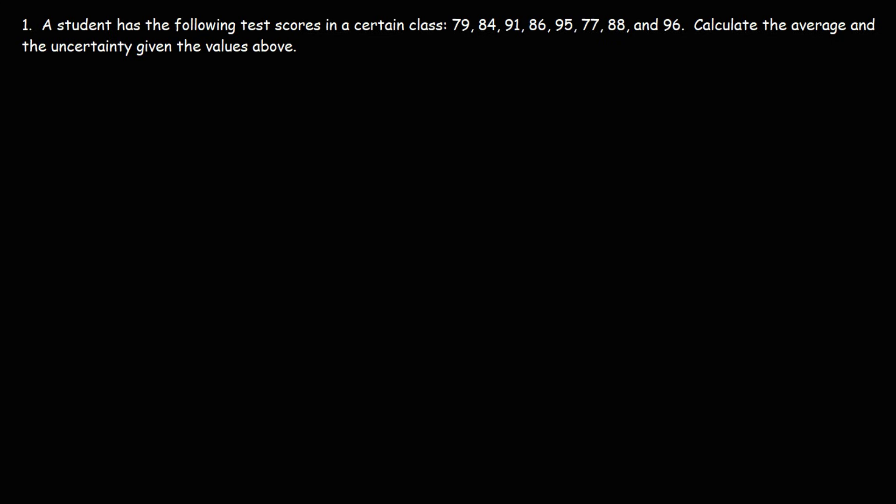A student has the following test scores in a certain class: 79, 84, 91, 86, 95, 77, 88, and 96. And we need to calculate the average and the uncertainty in those values.